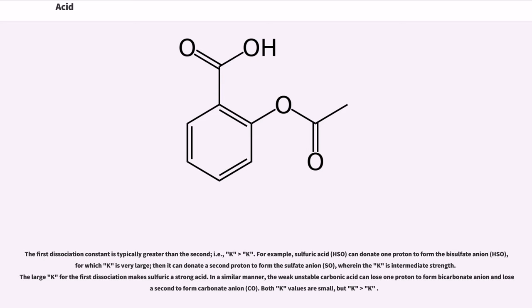In a similar manner, the weak unstable carbonic acid (H2CO3) can lose one proton to form bicarbonate anion and lose a second to form carbonate anion (CO3^2-). Both Ka values are small, but Ka1 > Ka2.